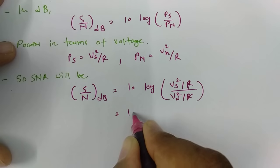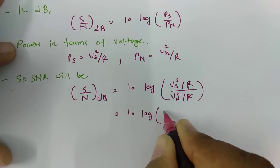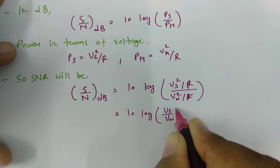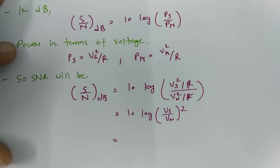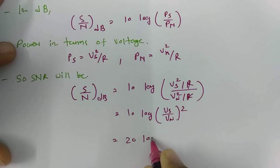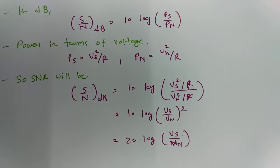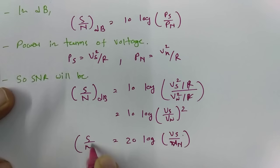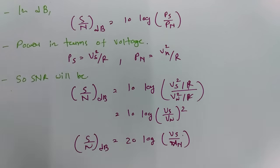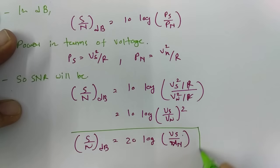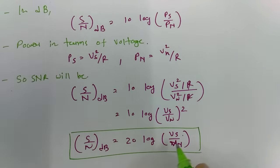The R terms cancel out, so this becomes 10 log of (VS / VN) squared. The square comes to the front as a multiplier, giving us 20 log of VS by VN. So SNR in terms of dB, expressed in terms of voltage, is 20 log of VS by VN.